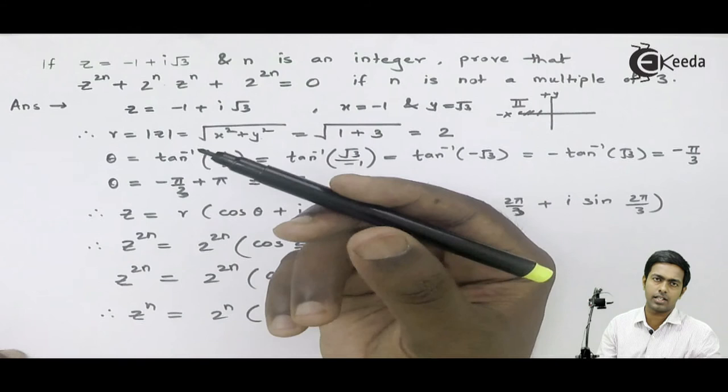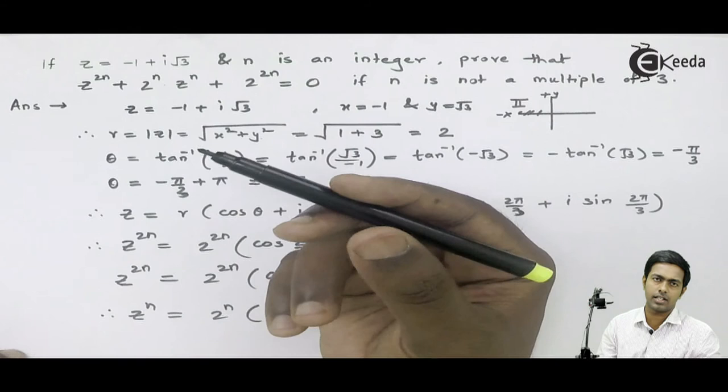Now we consider the LHS, substitute the values of these three terms, and check whether we are getting 0 when n is not a multiple of 3.